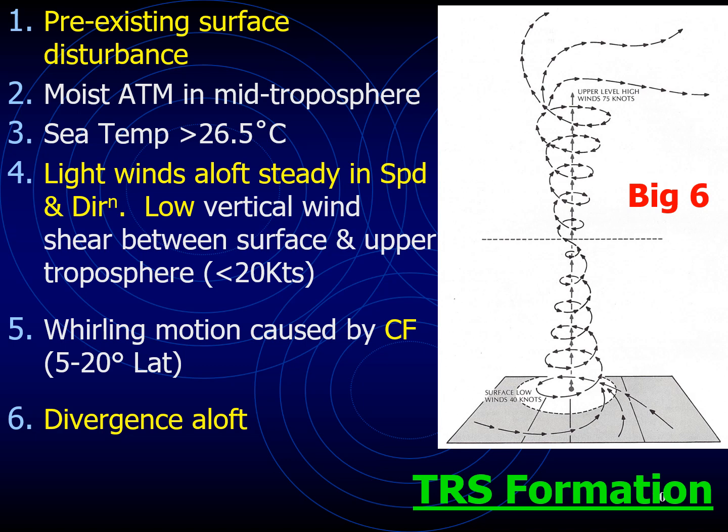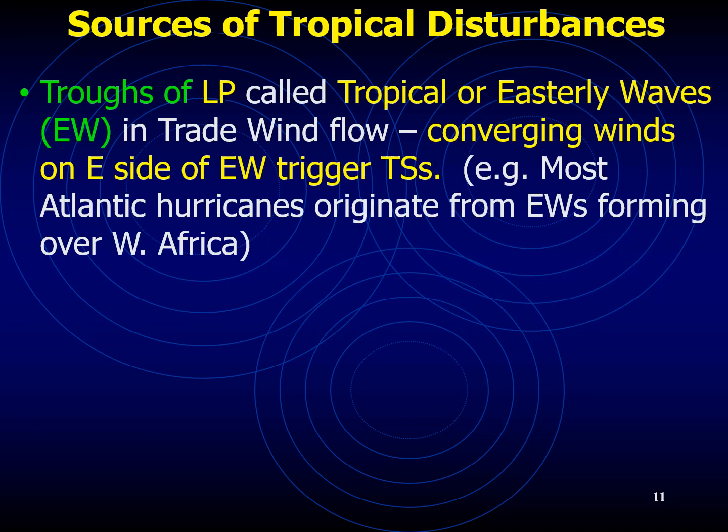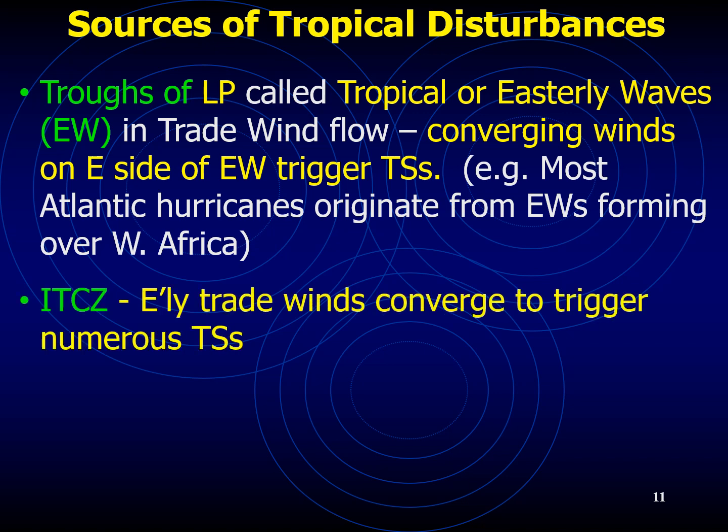The six main ingredients — the big six — contributing to the formation of a TRS are shown on screen. The winds in the tropics generally blow from the east, that is northeast or southeast, because the variation of sea level pressure is normally quite small. Instead of isobars, we have streamlines that depict wind flow. Streamlines are useful because they show where surface air converges and diverges. Occasionally the streamlines will be disturbed by a weak trough of low pressure called a tropical wave or an easterly wave.